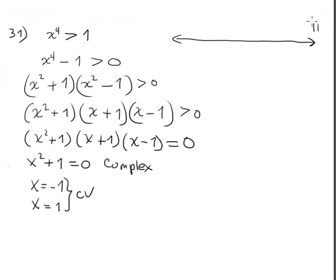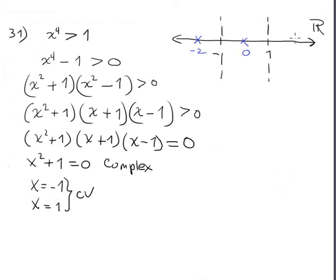We have the real number line with two critical values: negative one and positive one. For testing points, good choices are negative two, zero, and positive two.